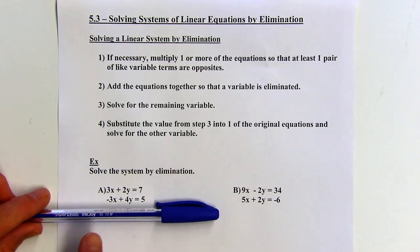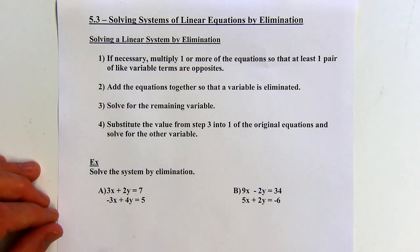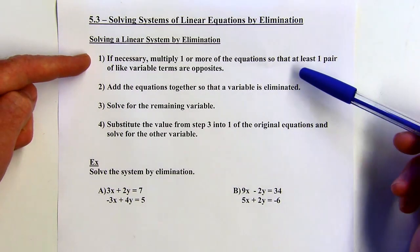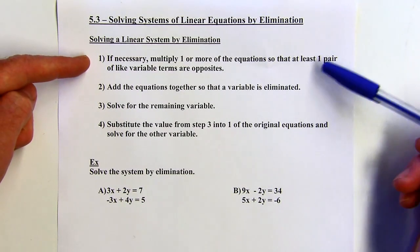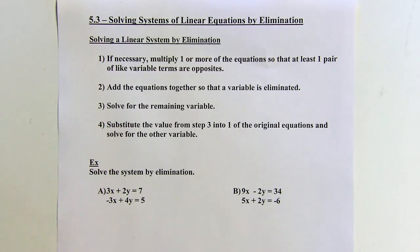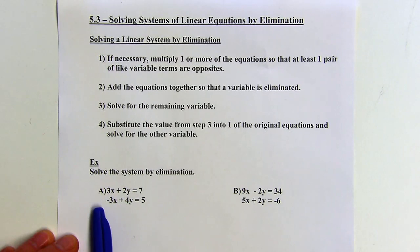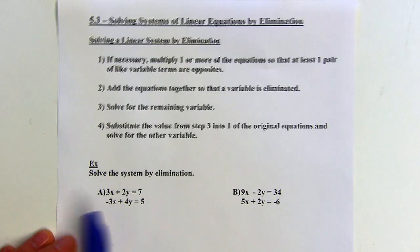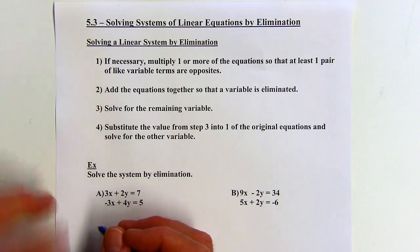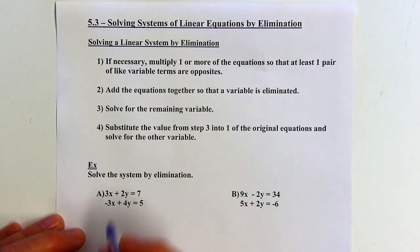What we want to happen is we want either the x's or the y's to be opposites. The first step says: if necessary, multiply one or more of the equations so that at least one pair of like variable terms are opposites. So I want either my x's or my y's to be opposites. In this particular problem, the x's are already opposites, so I don't need to do that first step.